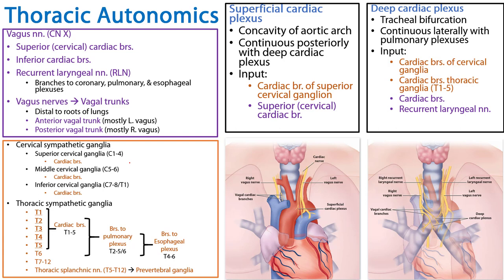We've discussed the thoracic viscera which have autonomic plexuses, talked about their inputs from the cervical and thoracic sympathetic paravertebral ganglia as well as the branches of the vagus nerves, and highlighted as a particular example the cardiac plexuses — both the superficial and the deep. This is your summary slide. Thank you for your time.